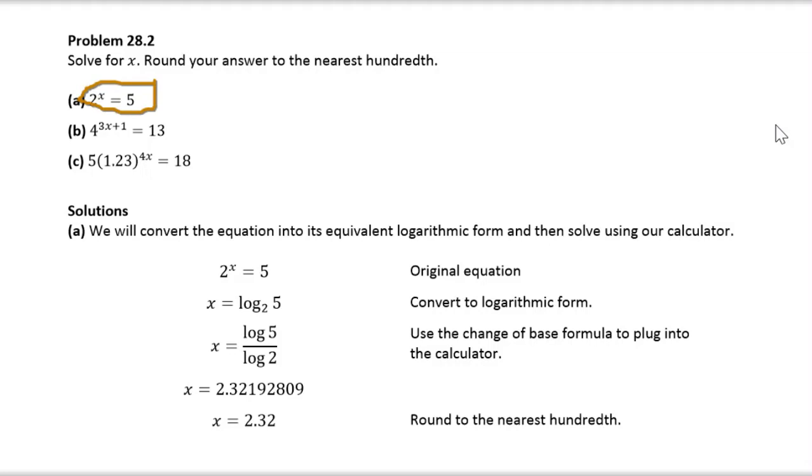So here we have 2 to the x, and on the right we have 5. So 5 is not a number that is a power of 2, so we cannot express the right side using base 2.